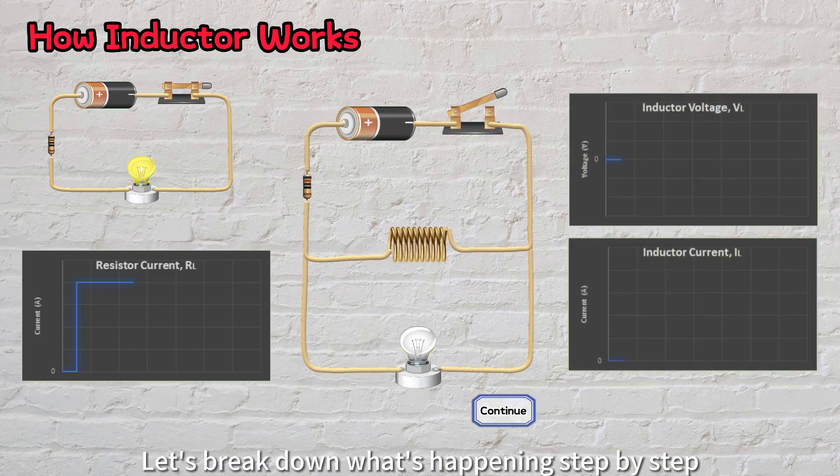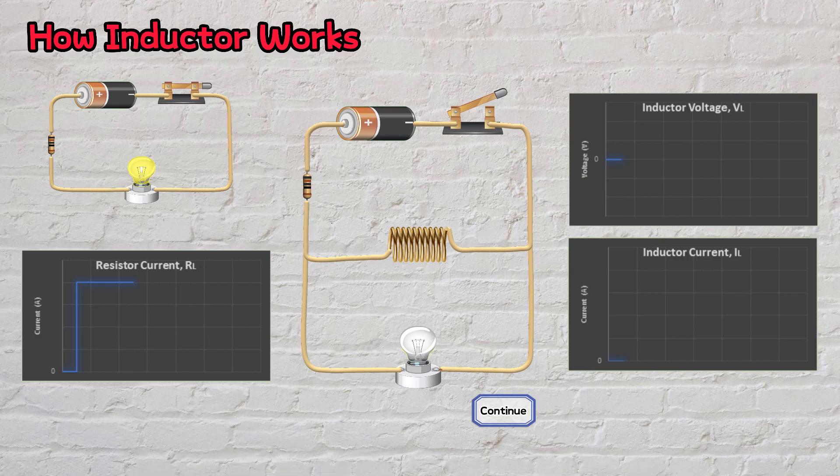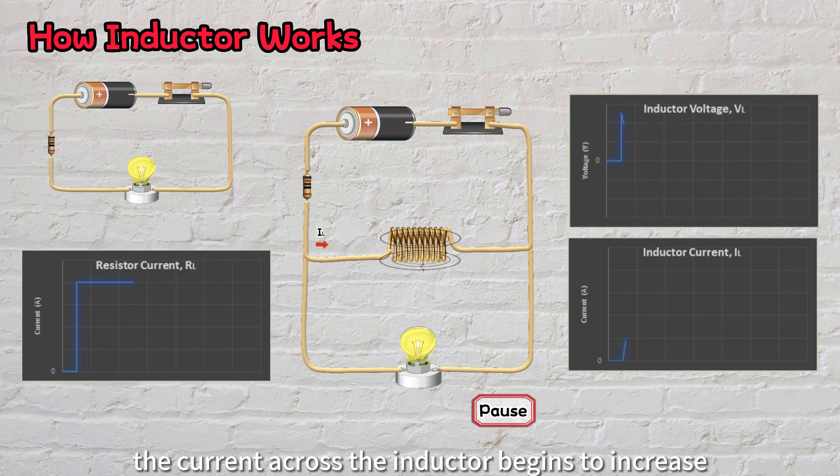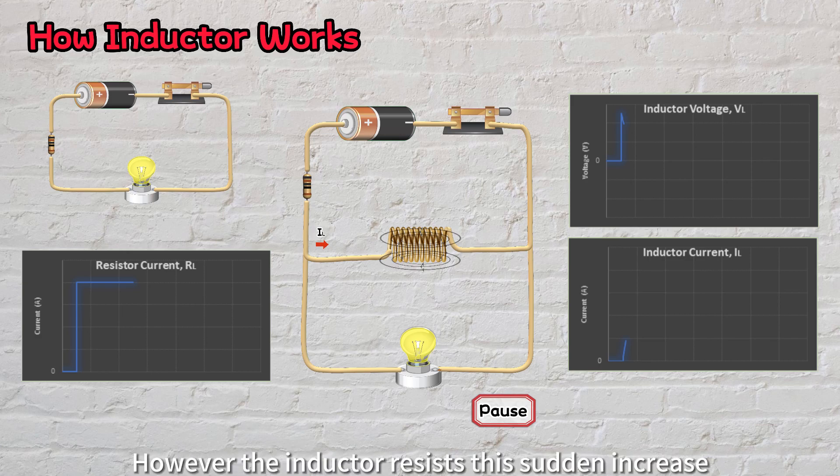Let's break down what's happening step by step. Initially, no current flows through the circuit, and the current is zero. As we turn on the switch, the current across the inductor begins to increase.